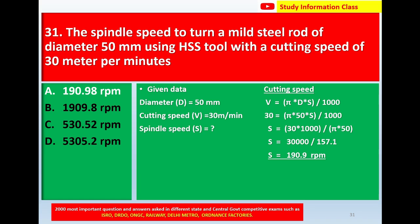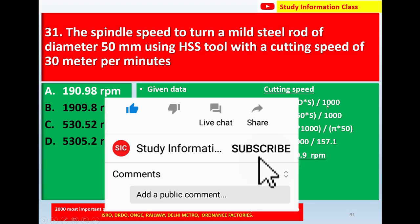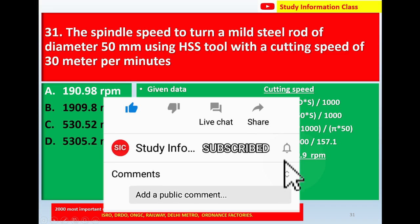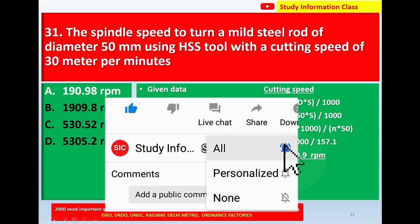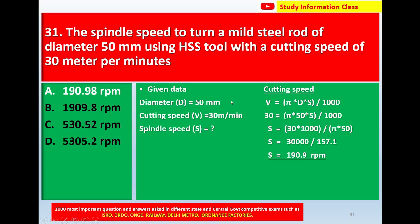For the complete solution to question 31, first note the given data. We need to find the spindle speed. The mild steel rod diameter D = 50 mm, and the cutting speed is 30 meters per minute. We know the cutting speed formula: V = (π × D × S) / 1000, where diameter and cutting speed are given and we must find spindle speed S.